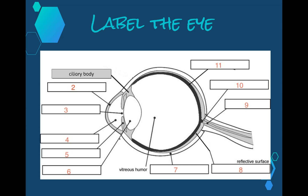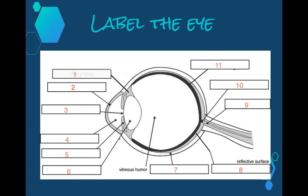Here we can see an image of the eye with 11 parts that we need to label. I'm going to go through the labels really quickly and then we'll move on and have a look at the structure and function of each of these parts. Number one is the ciliary body, which are the little muscles that hold on to the lens.